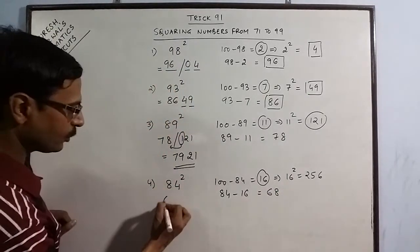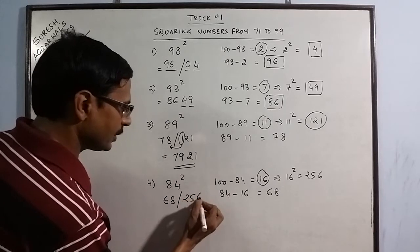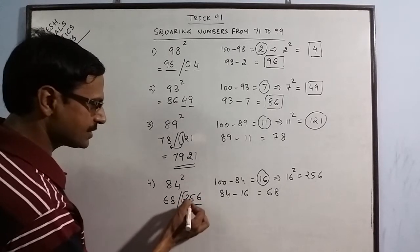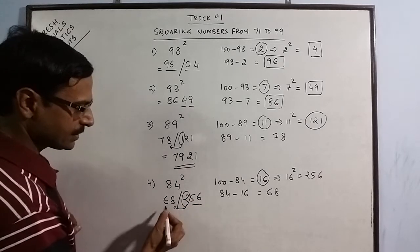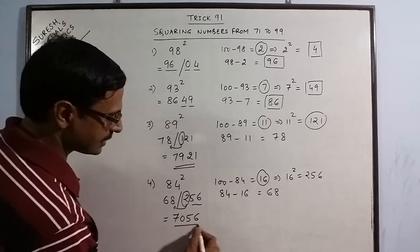So your answer will have 2 parts. 68 is the first part and in the second part you have 256. But you cannot have 3 digits here. Retain 2 digits and this digit will be added to this part. 68 plus 2 is 70 and 56 will retain its place. The answer is 7056.